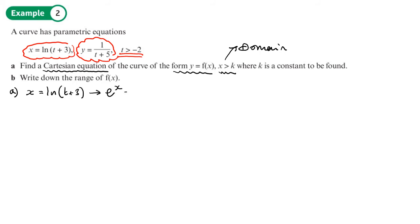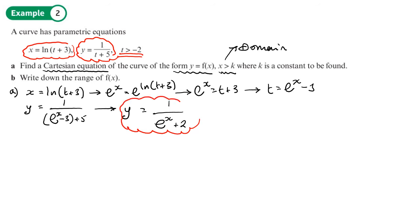So we're going to take the x function and make t the subject. So the first thing we're going to do is e to both sides. From there, the e and log will cancel out. And last step, we'll have t equals e to the x minus 3. Now that can get substituted into the second function. So y equals 1 over e to the x minus 3, that's what t is, plus 5. And that will simplify to y equals 1 over e to the x plus 2. So there we go. There's our Cartesian equation in the form that they require.